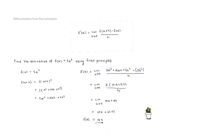Notice what this result means: f prime of x is a derivative function — it tells you not only the instantaneous rate of change along the curve, but more importantly it gives you the gradient of tangent lines at any given point along your original function f of x. In the next lesson we'll verify this using the rules of differentiation.